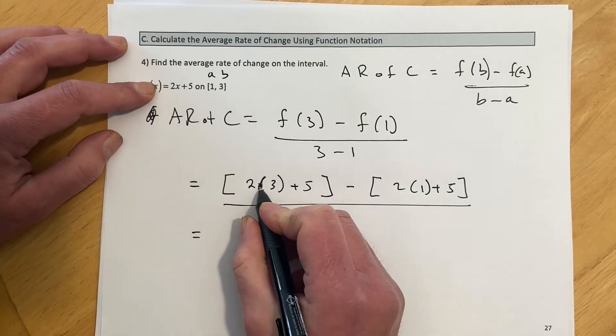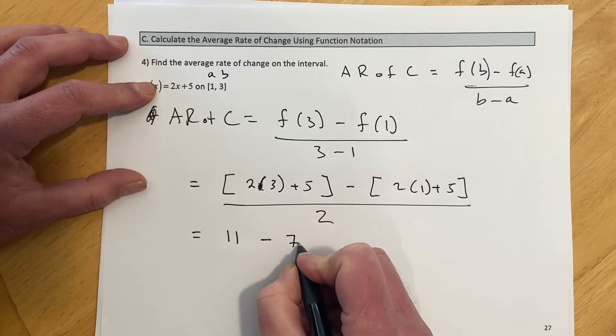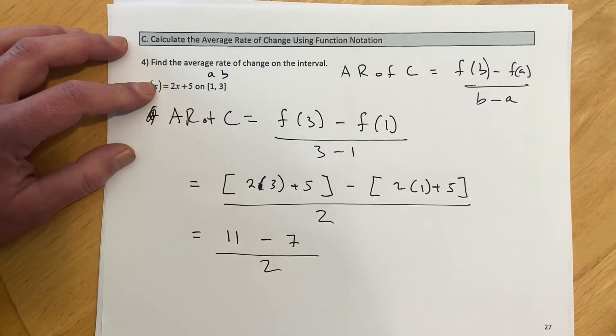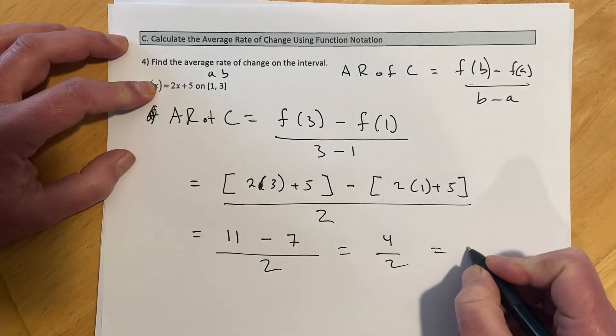And then here, this would be 6 and 5 would be 11 minus 2 and 5 makes 7 over 2. And then that would be 4 over 2, which equals 2.